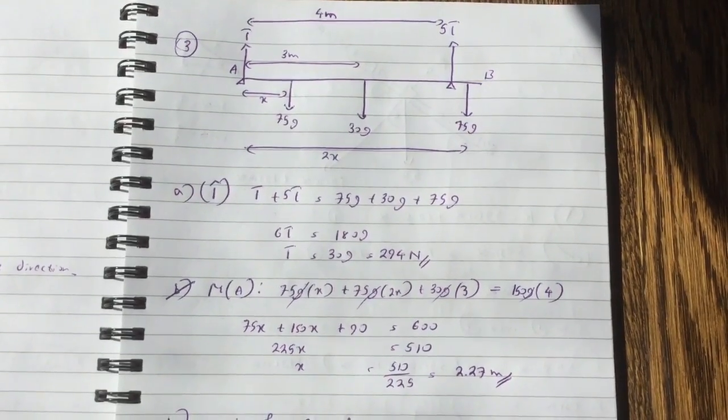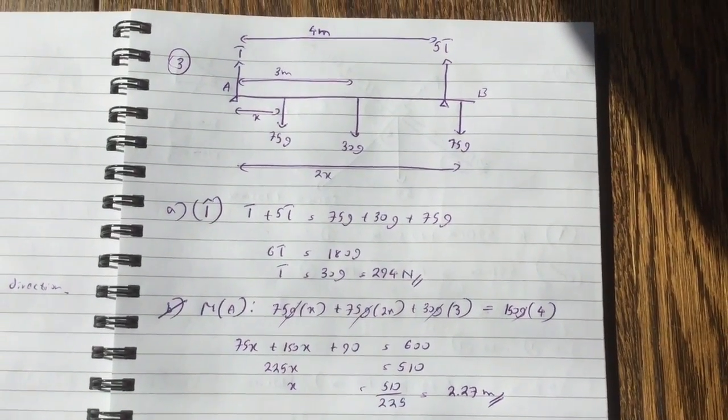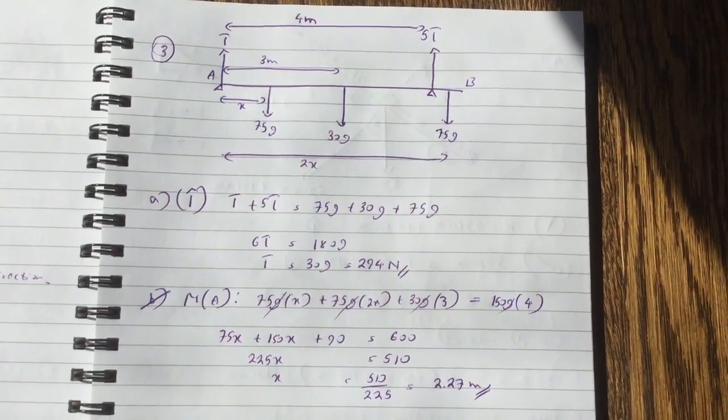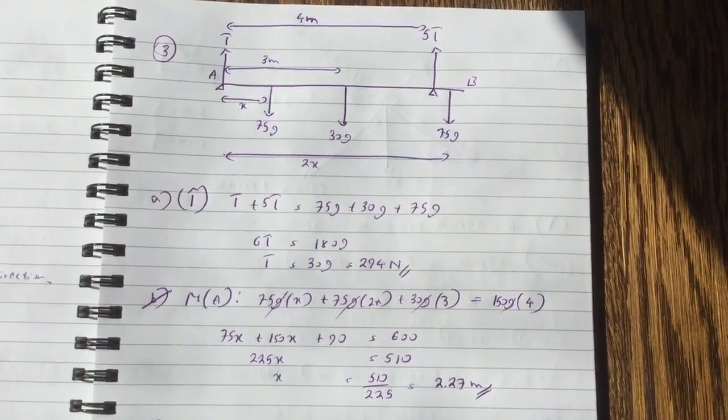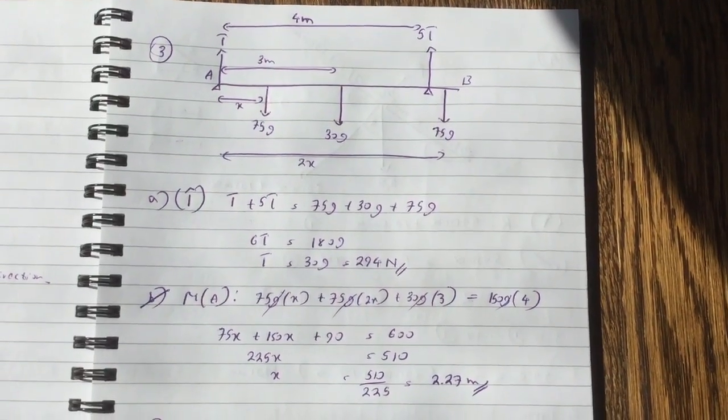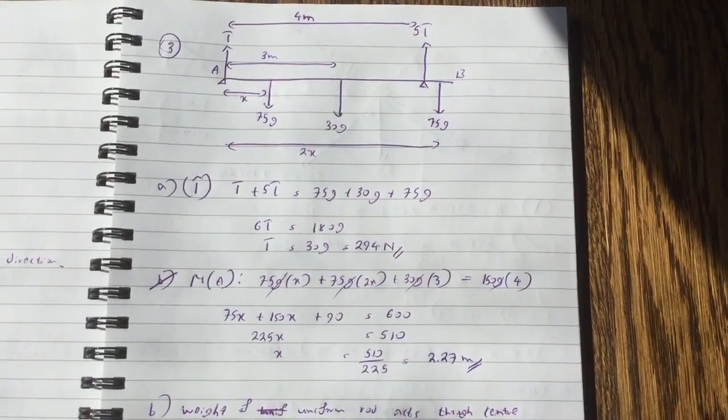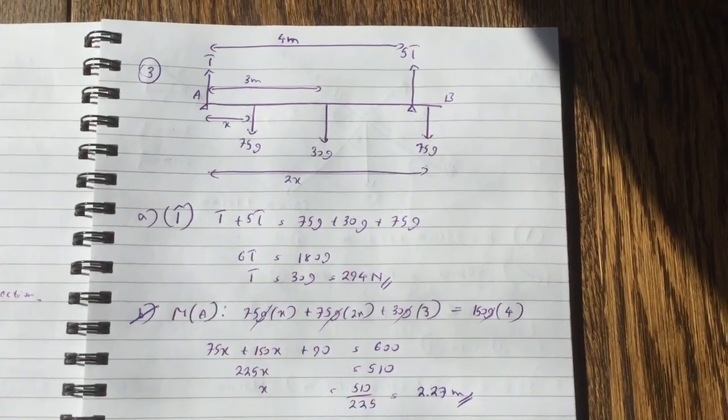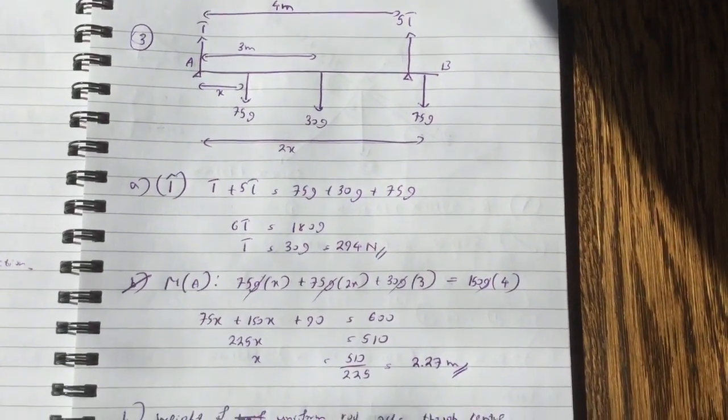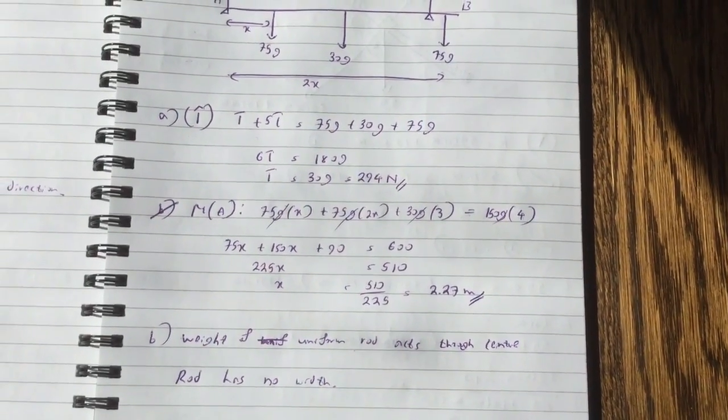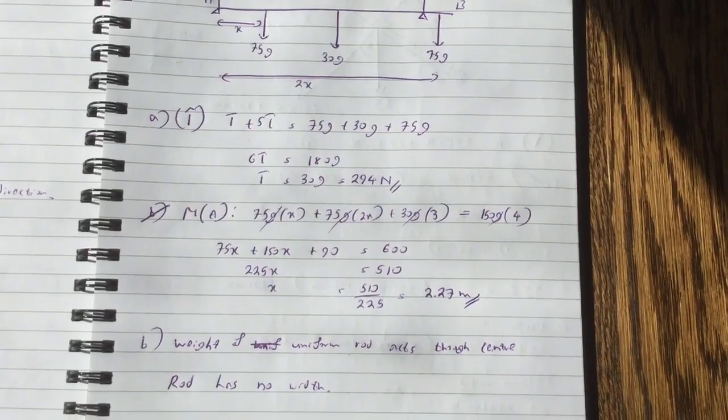And if you take moments about A, so I've done all the clockwise forces, which are 75g times x, 30g times 3, 75g times 2x equals all the 5T reaction, which is 4 meters away. And when you work it out, simplify it and solve it, you get x equals 510 over 225, and then that works out to be 2.27 meters.